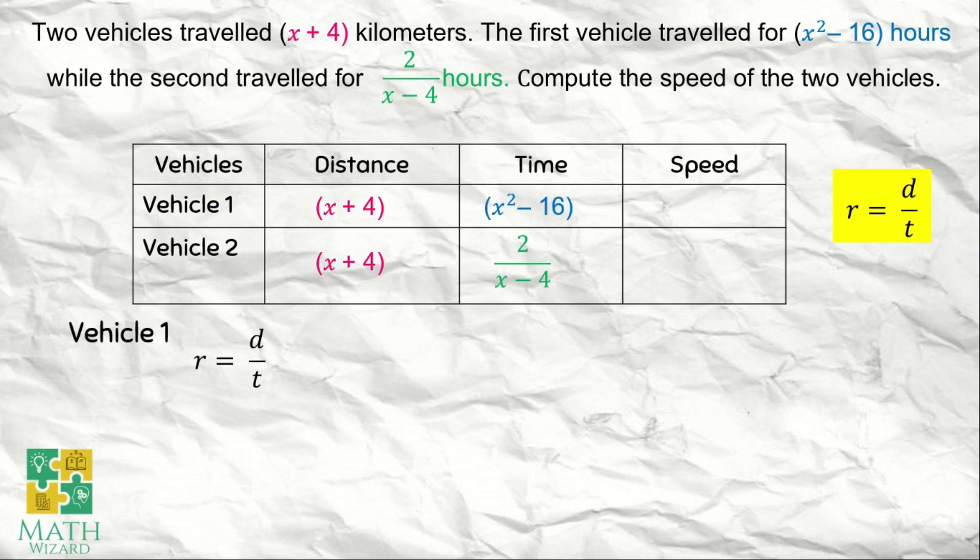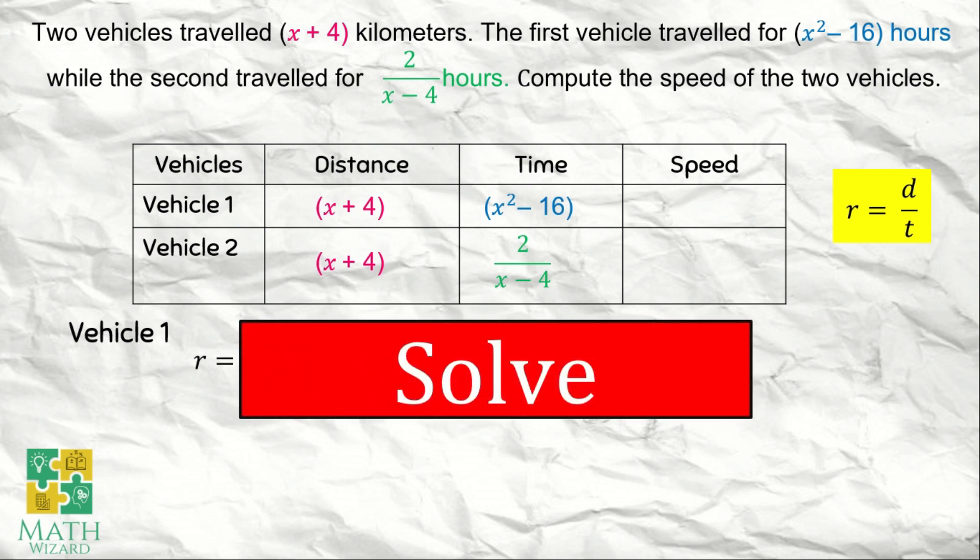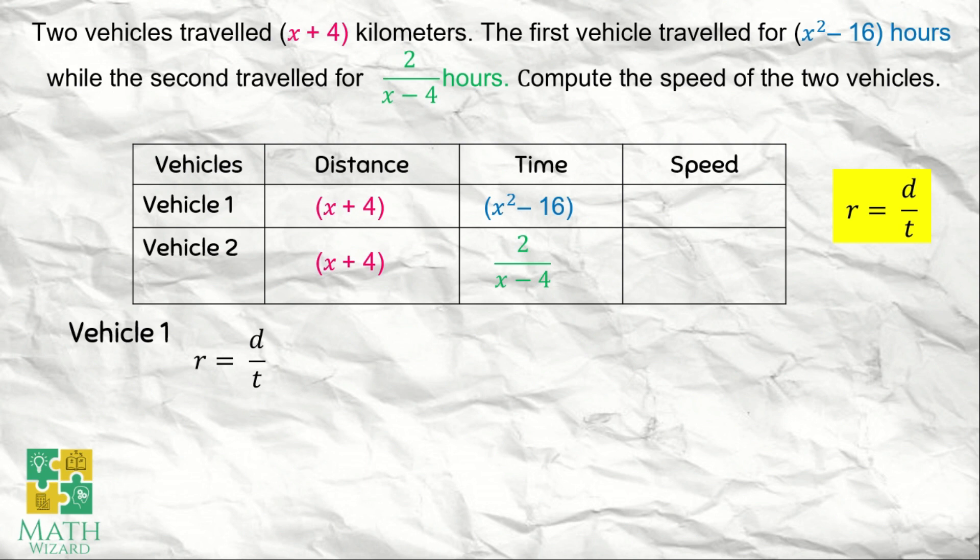Next, we need to solve the problem. We'll compute the speed of the two vehicles. Let's start with vehicle 1. We have our formula. We're just going to substitute the value of the distance and the time. For vehicle 1, the distance is x plus 4 and the time is x squared minus 16. So we have x plus 4 over the quantity of x squared minus 16.